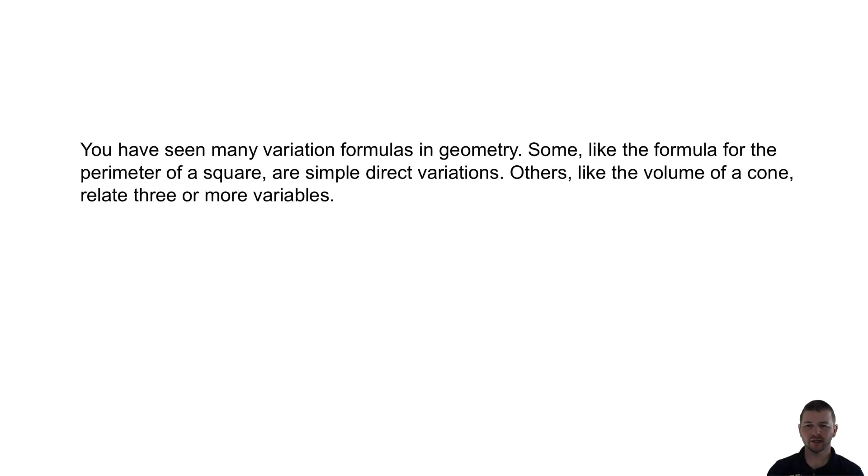You may have seen many variation formulas in geometry. Some, like the formula for the perimeter of a square, are simple direct variations. Others, like the volume of a cone, relate three or more variables.